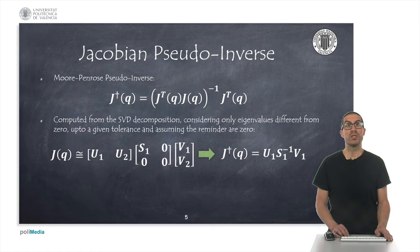The obtained solution using the pseudo-inverse is the solution with the minimum norm in the configuration vector.